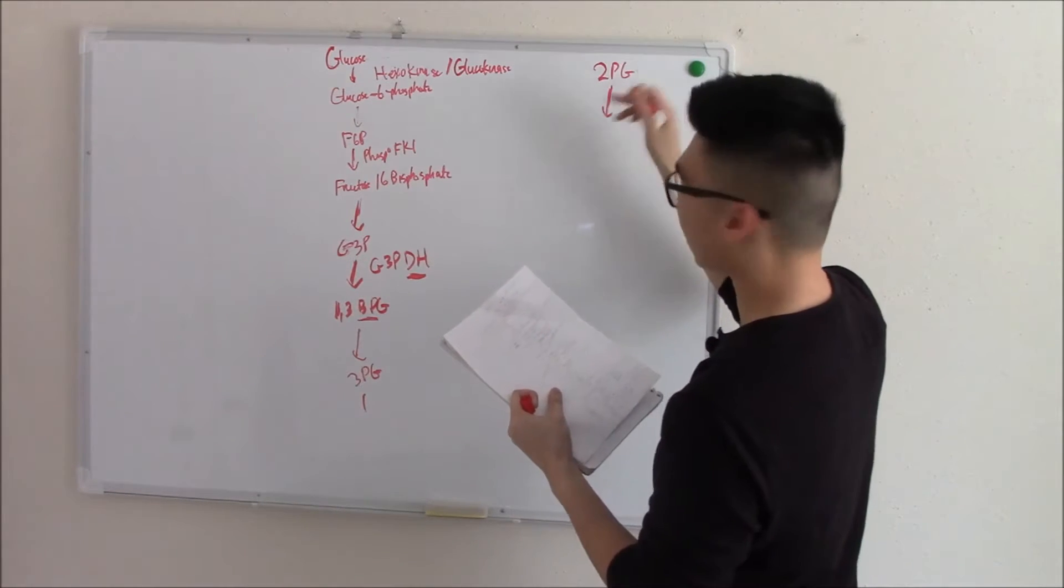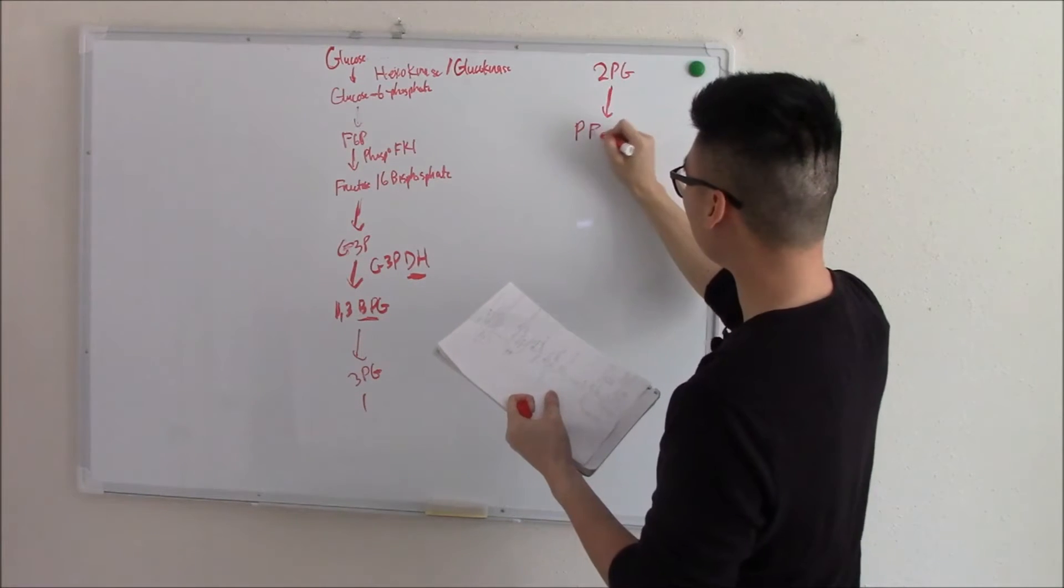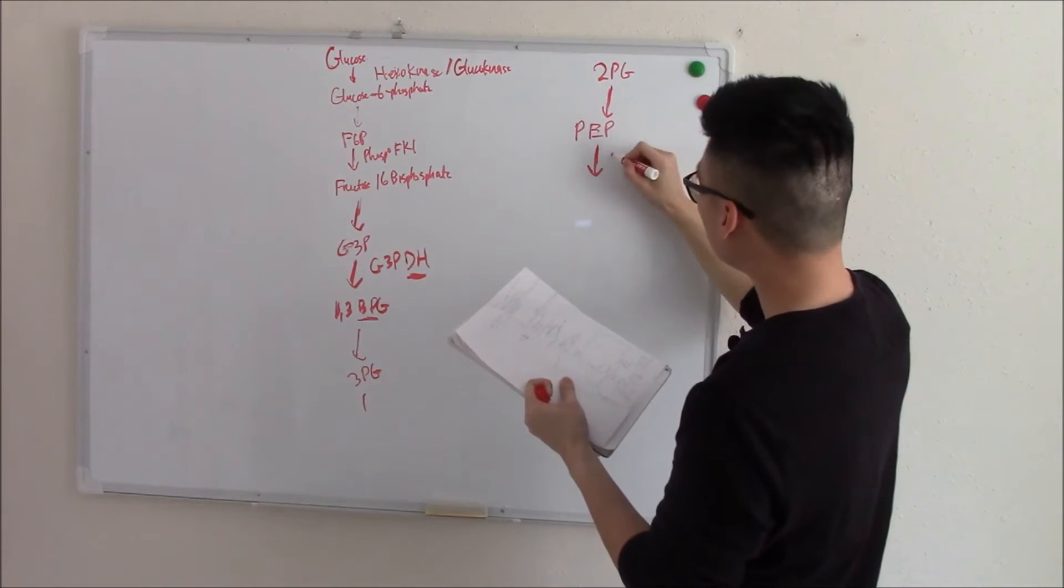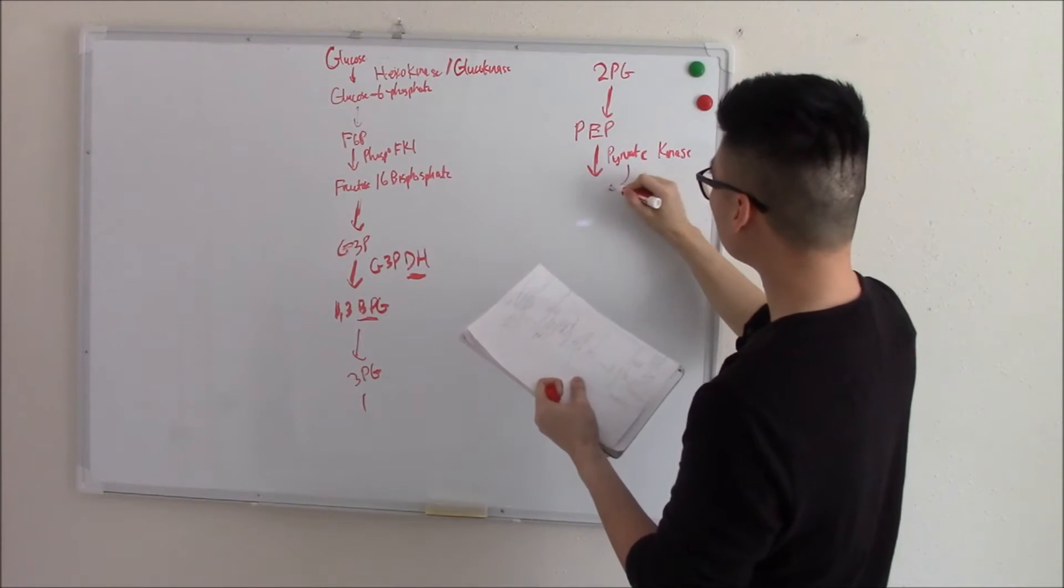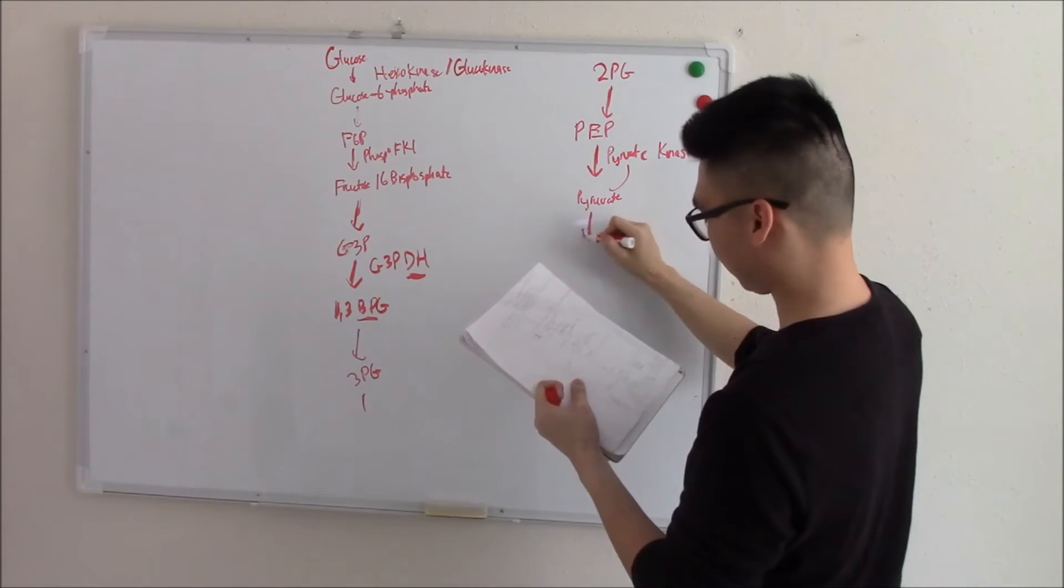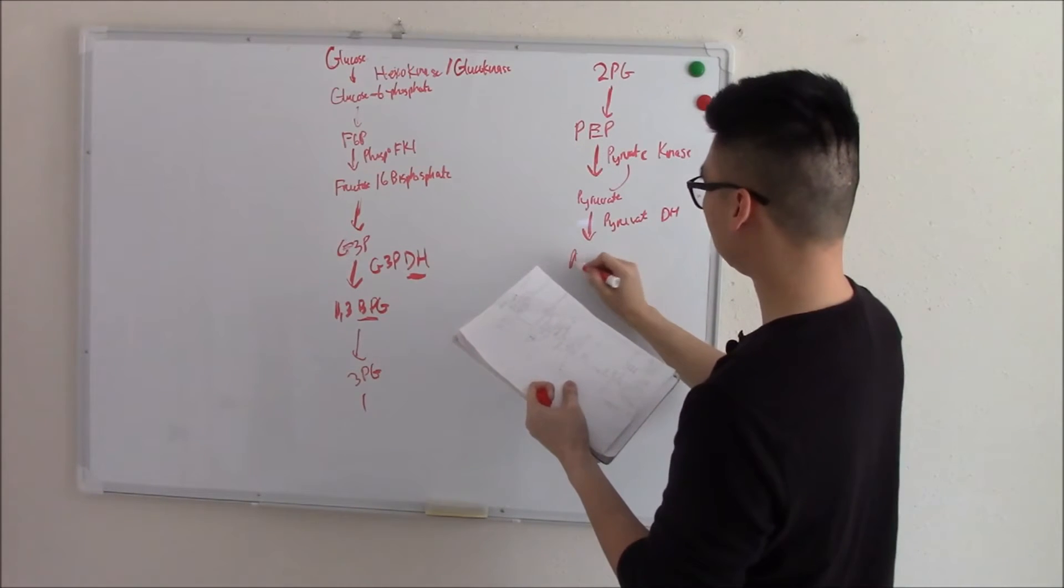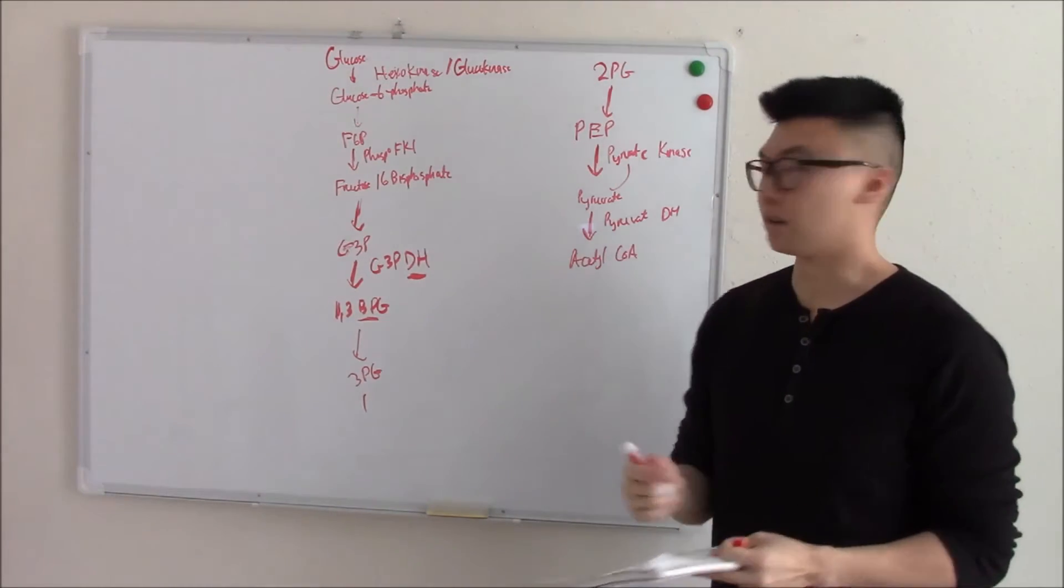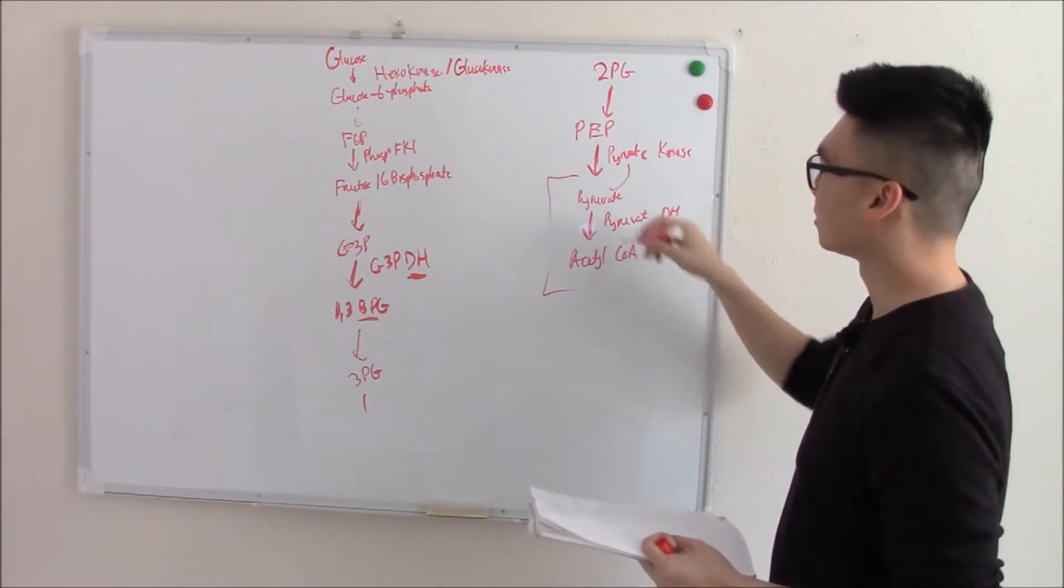And then finally, not finally, but near finally, 2-PG to phosphoenolpyruvate acid, PEP, which we talked about in our first video. That has a helper, pyruvate kinase, which makes pyruvate. And then lastly, pyruvate dehydrogenase makes acetyl-CoA. So what are the building blocks we're talking about? It'd be these two. These two can make a ton of things. And we're going to focus on these moving forward.